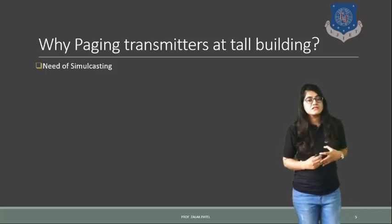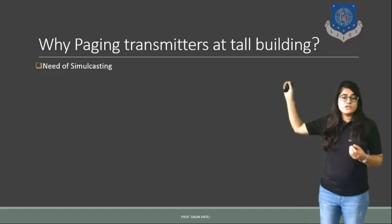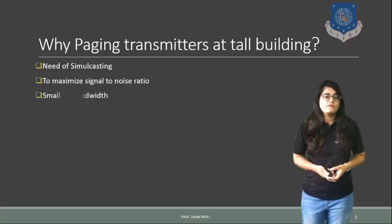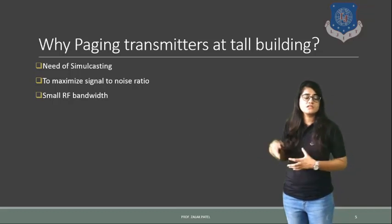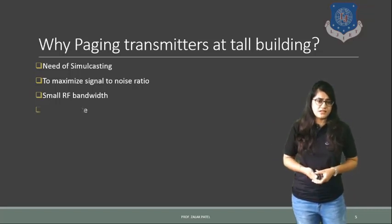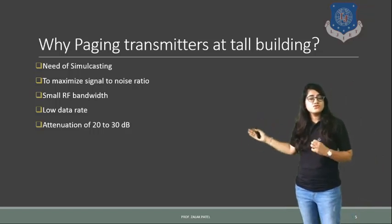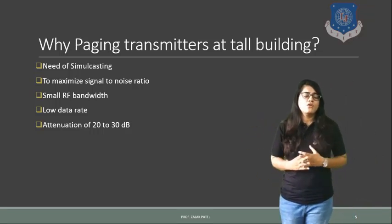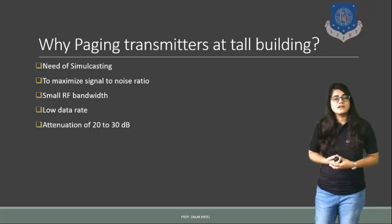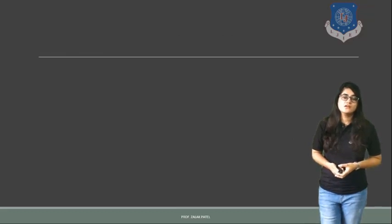The question is: why are paging transmitters placed on tall buildings? The reasons are: for simulcasting purposes and to guarantee maximum signal-to-noise ratio. A small RF bandwidth — meaning sufficient radio frequency bandwidth — is required. The system offers low data rates and attenuation of 20 to 30 dB, and we always try to minimize this attenuation level. These are the key factors, which is why paging transmitters are placed on tall buildings.